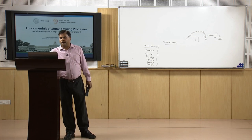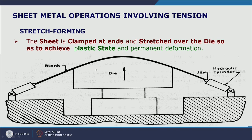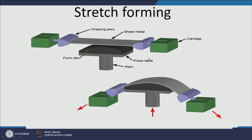This typical figure shows the form block or die against which the die is pushed against the blank or sheet metal. The sheet metal is held at the ends using a flexible arrangement — hydraulic cylinders are used to allow a little bit of movement. When the die is pushed through the sheet metal, it develops tensile stresses, which leads to the sheet metal taking the shape of the die. The sheet metal is clamped at the ends and stretched over the die to achieve the plastic state and permanent deformation.